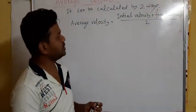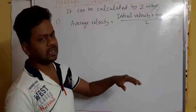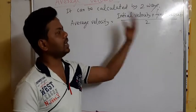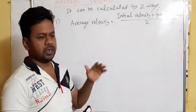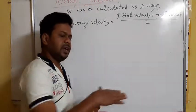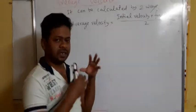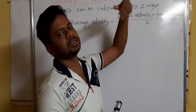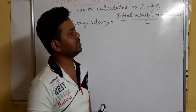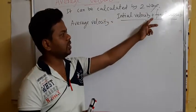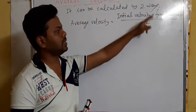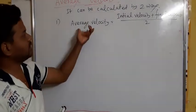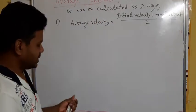What is initial velocity, final velocity? Because velocity changes, the first velocity can be called as initial velocity and the last velocity can be called as final velocity. So, if the velocity varies, the starting velocity is initial velocity and the last velocity is final velocity. If you add these two velocities and divide by two, that is the average velocity. This is the first way by which you can find out average velocity.